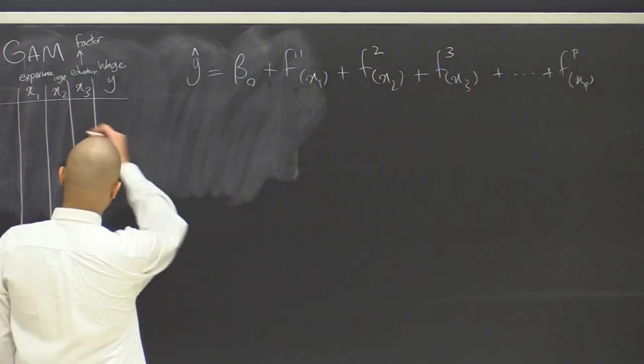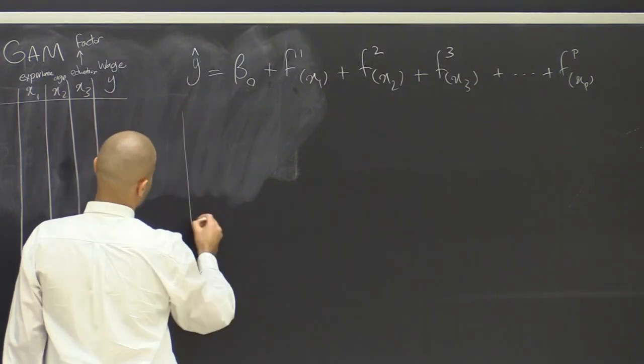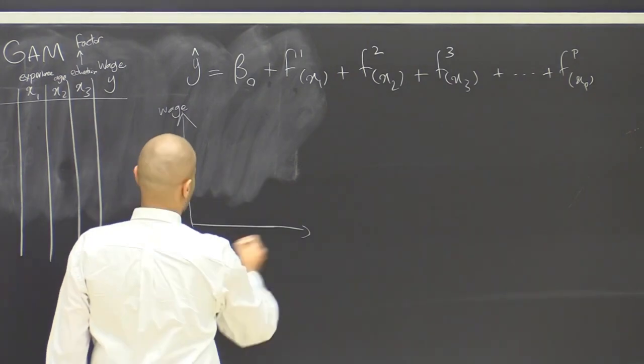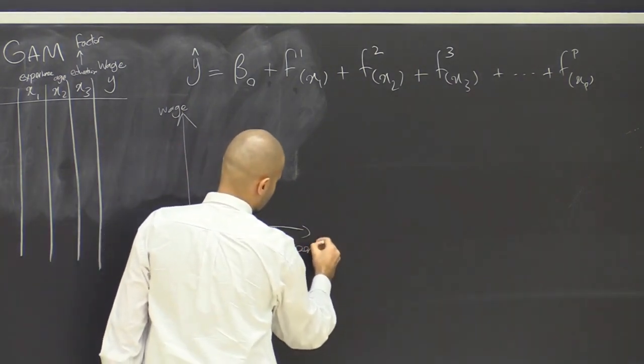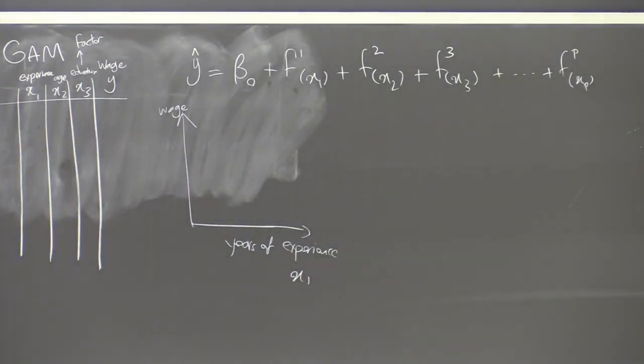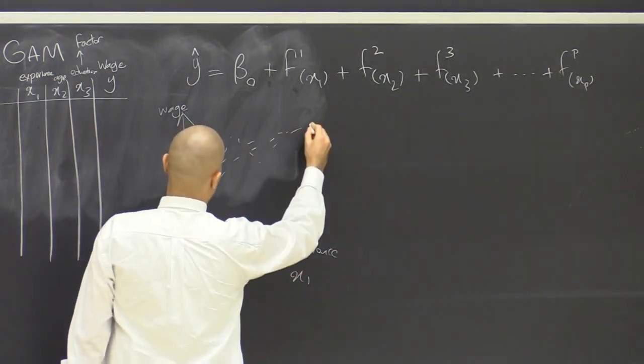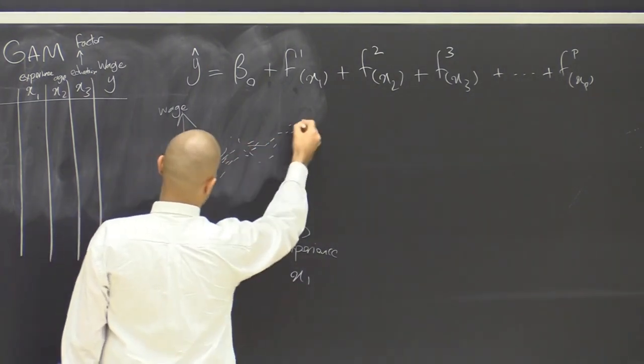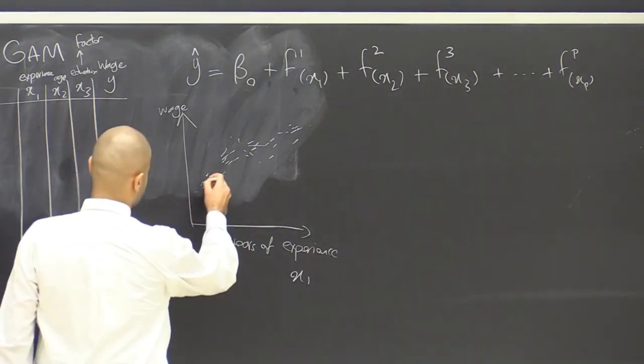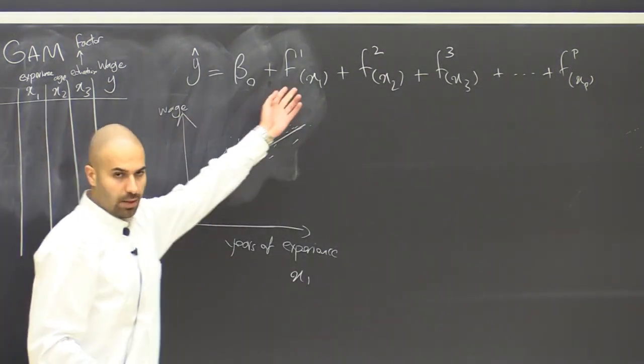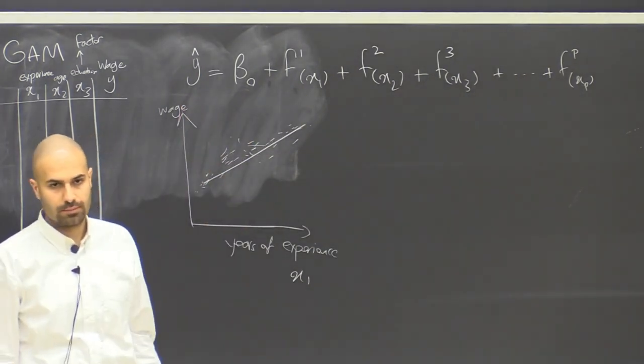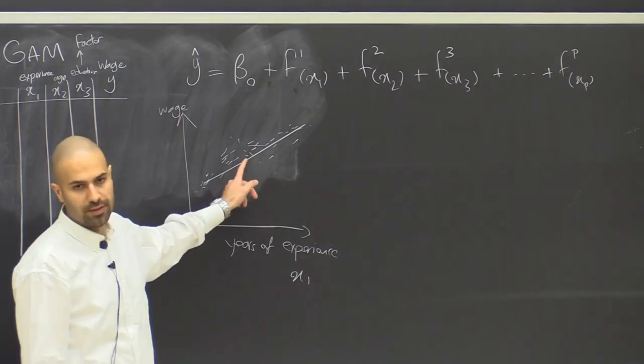So if the data that we have for these three predictors and wage look like this. So wage and years of experience, this is our x1. The data might be something roughly like this. So it is not perfectly linear. But we see that we can have a relatively good r squared if you just use a linear function. So then f1 becomes just a univariate regression of x1 and y because this is already a good fit for this scatterplot.